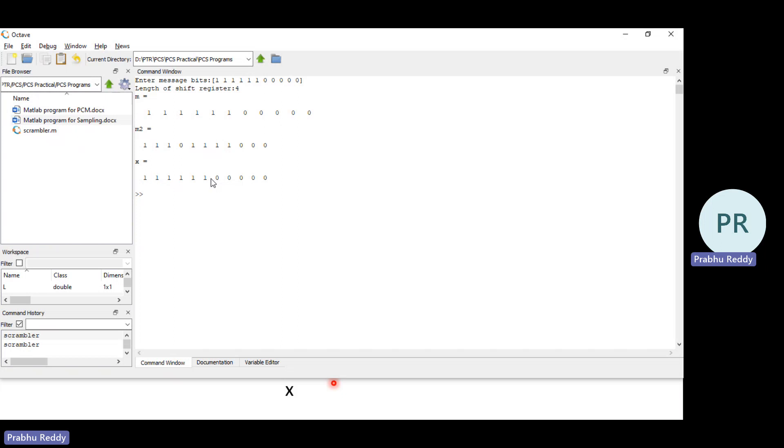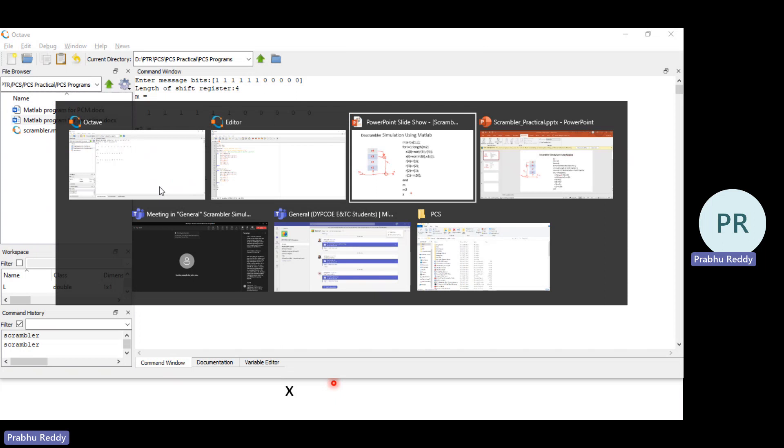Verifying the output: 1, 2, 3, 4, 5, 6 in the input matches 1, 2, 3, 4, 5, 6 in the output. Yes, M and X are both same. So this is how we can simulate by using MATLAB. How can we simulate Scrambler by using MATLAB?